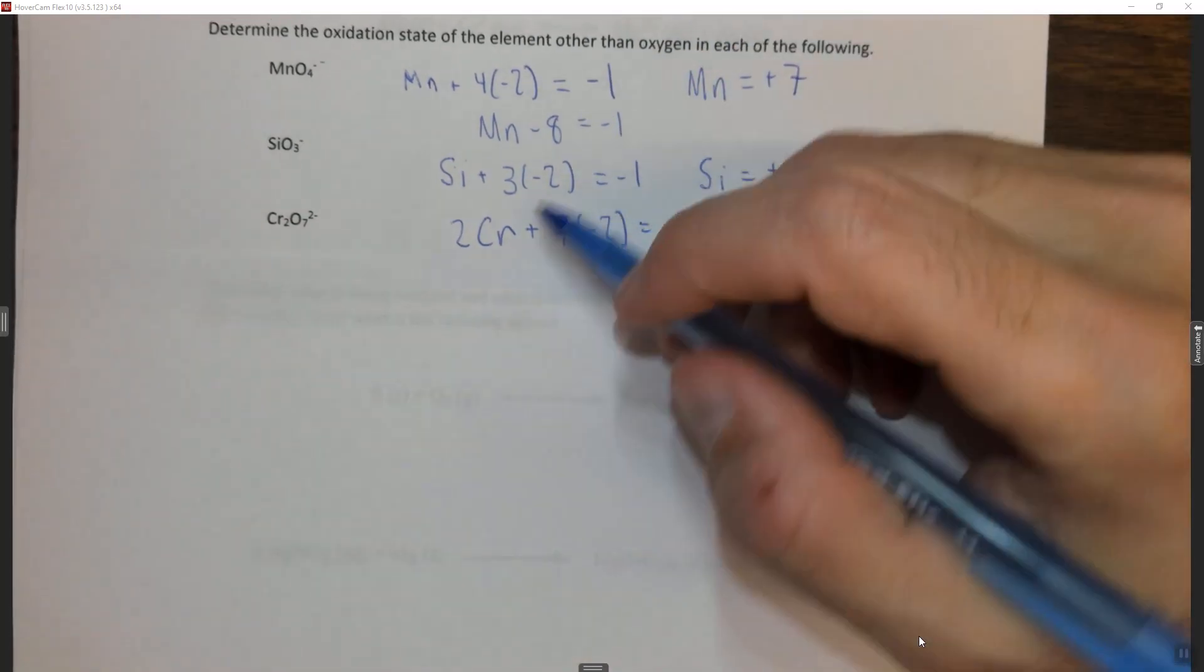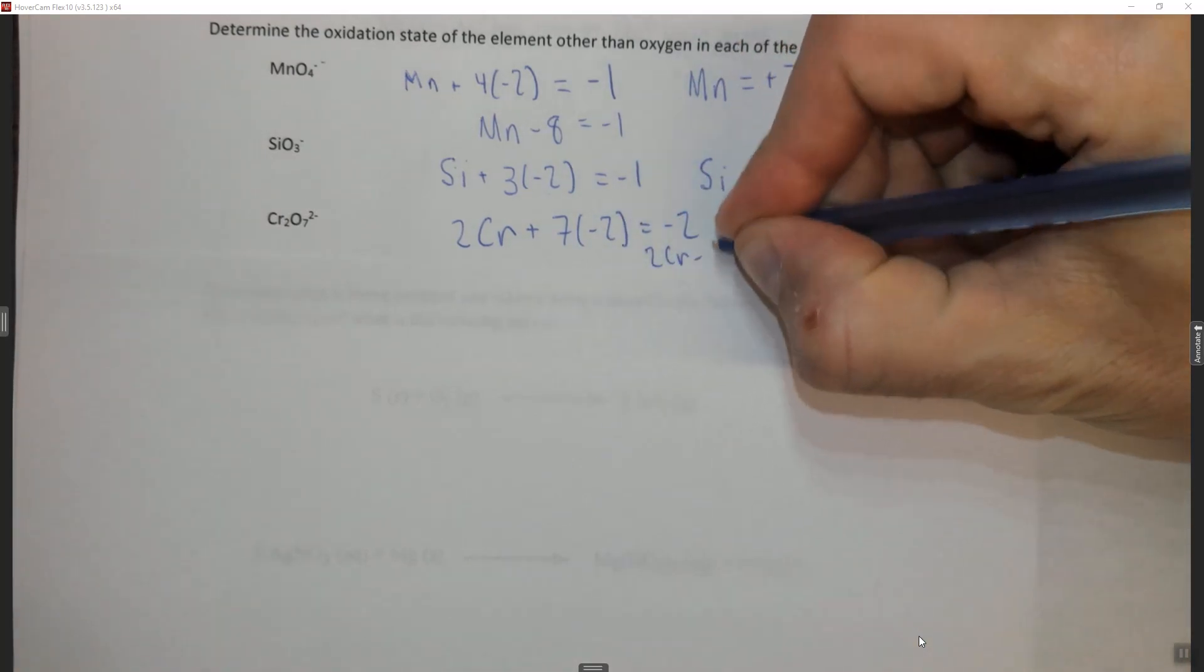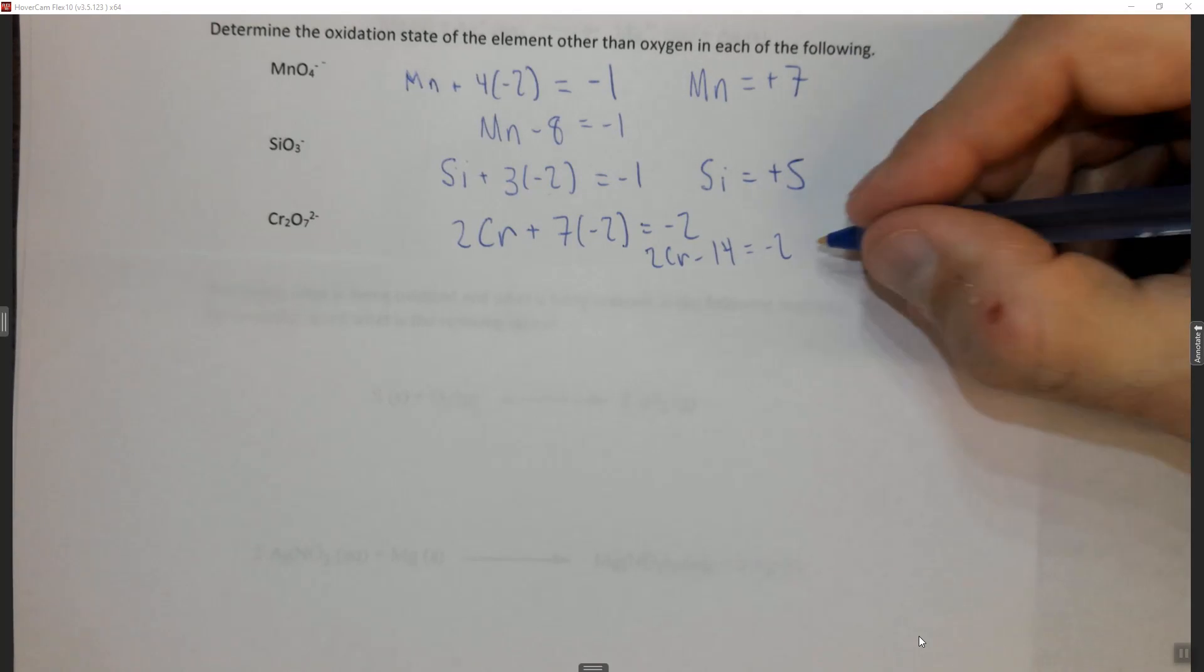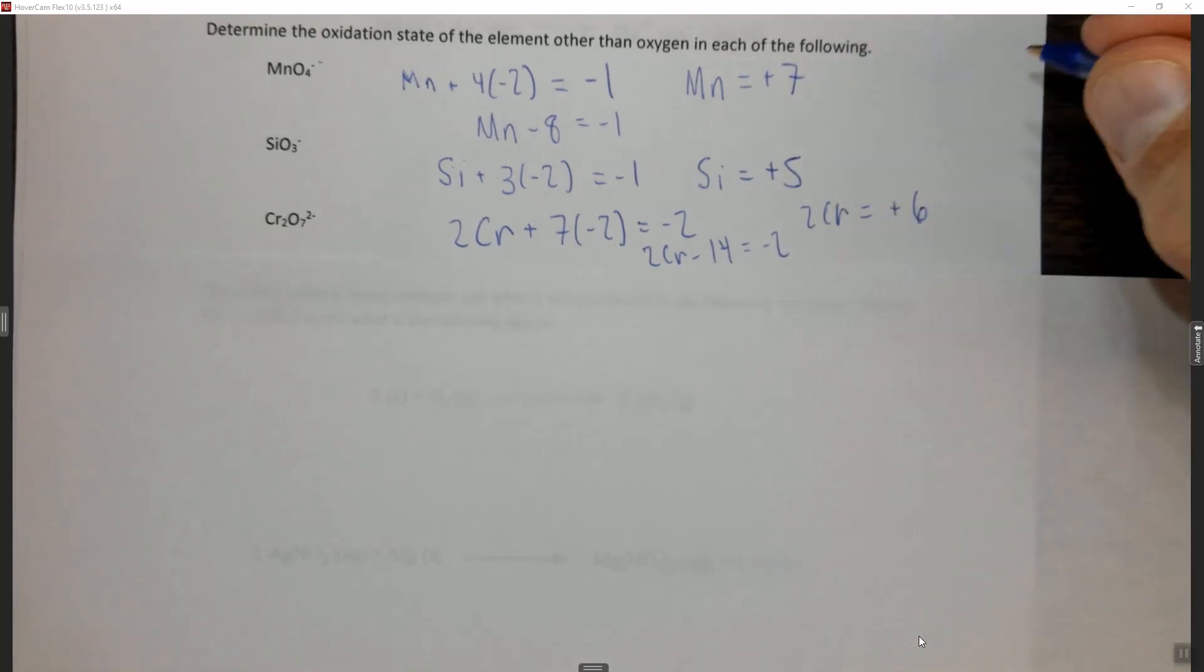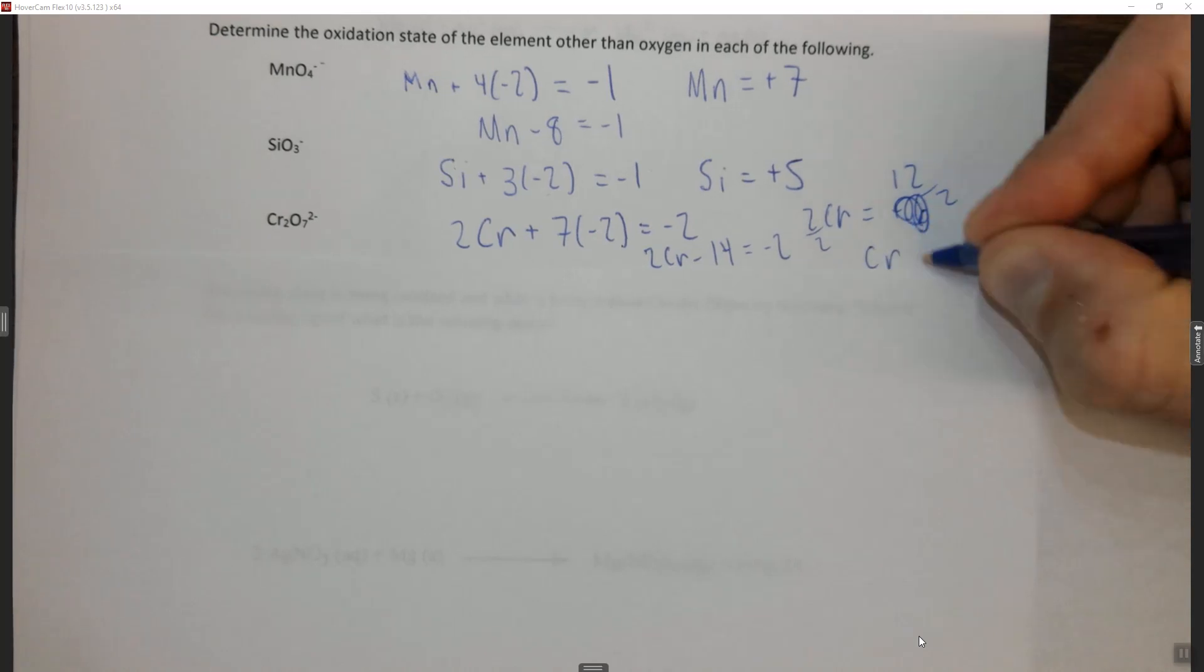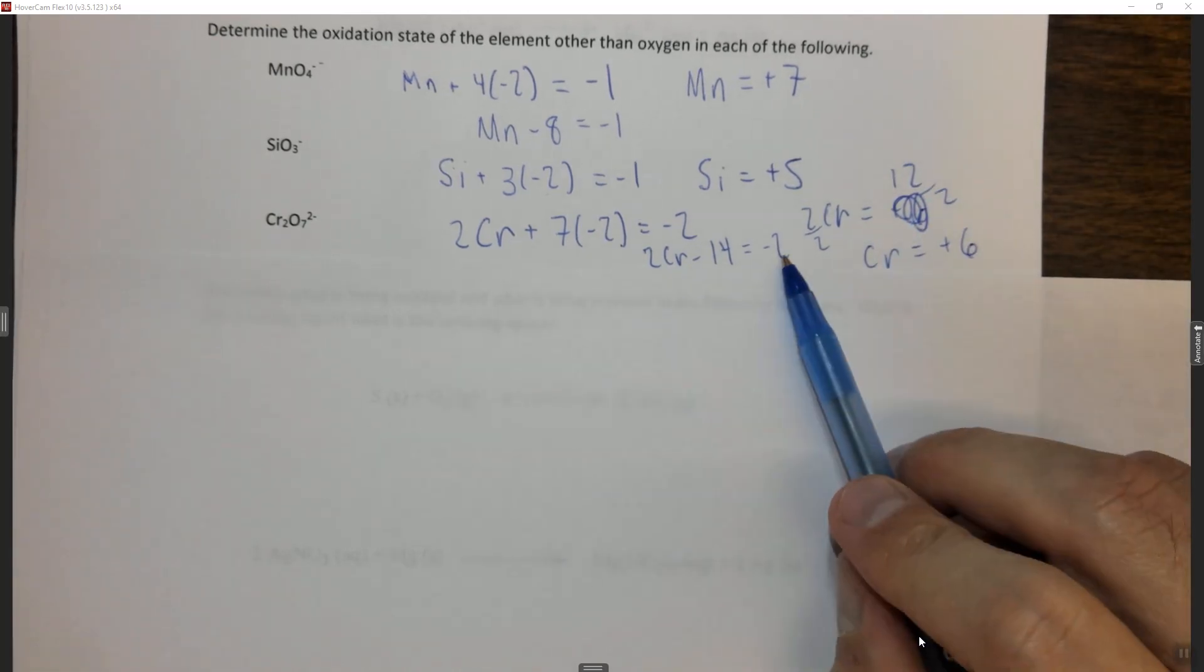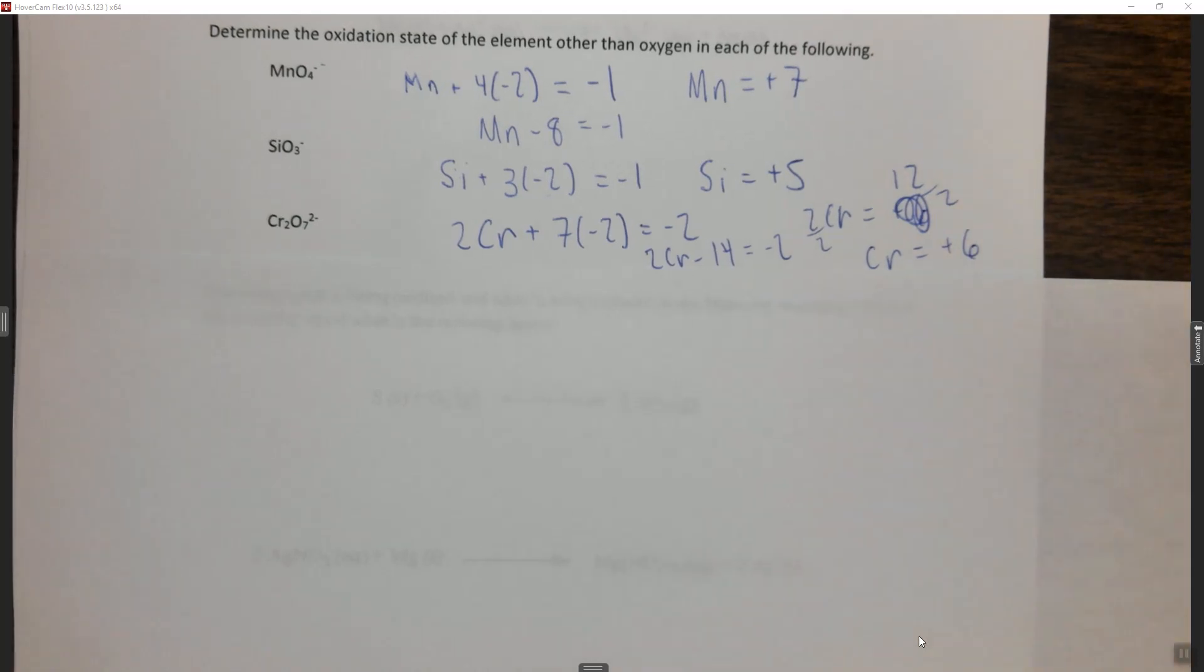Now when we do this, we get two Cr minus fourteen equals minus two. Add fourteen to both sides and you get two Cr equals plus six. Oh sorry, two Cr equals plus twelve. Then divide by two, and Cr equals plus six. So we add fourteen to both sides we get twelve, and then we have to divide by two, and then we get Cr is plus six.